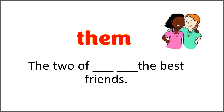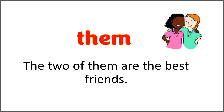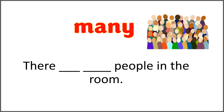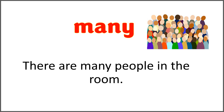The given word is 'them,' and the sentence is 'the two of blank blank the best friends.' Use the word 'them' with 'are' to complete this sentence. The two of them are the best friends. The given word is 'many,' and the sentence is 'there blank blank people in the room.' Use the word 'many' with 'are.' There are many people in the room. Yes, there are plenty of people — there are too many.